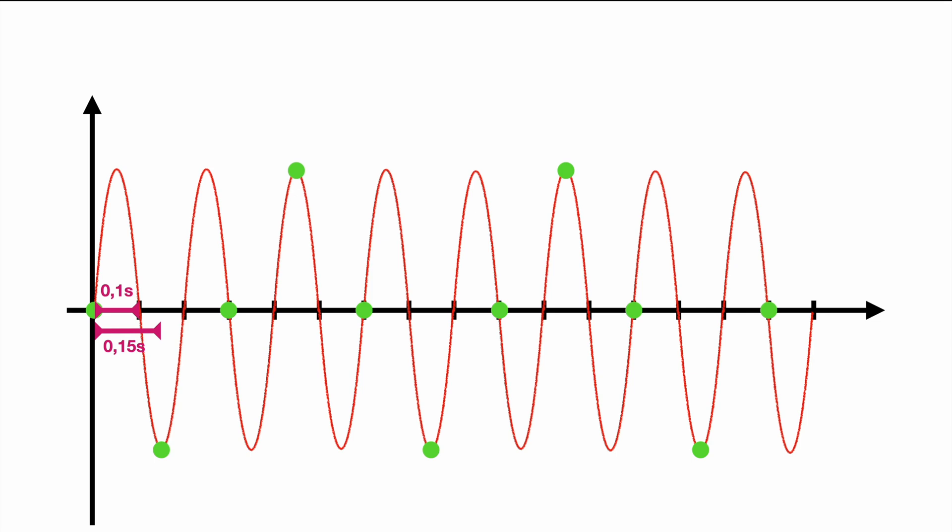What our scope will do now is it tries to connect all those measurement points to create one signal or to calculate one signal in case we have a digital scope. So our signal would look something like this.